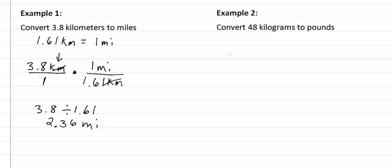Let's look at our second example. We want to convert kilograms to pounds, and if we look at our conversion table, we see that the two point two pounds equals one kilogram.